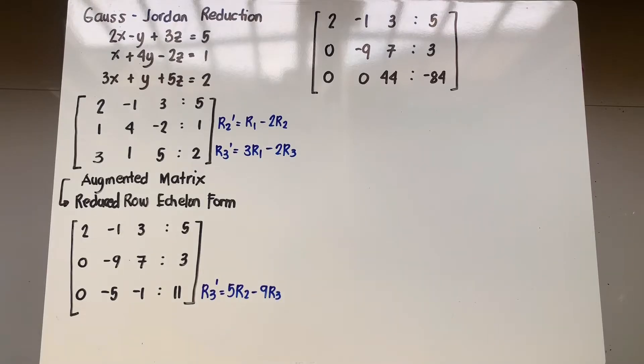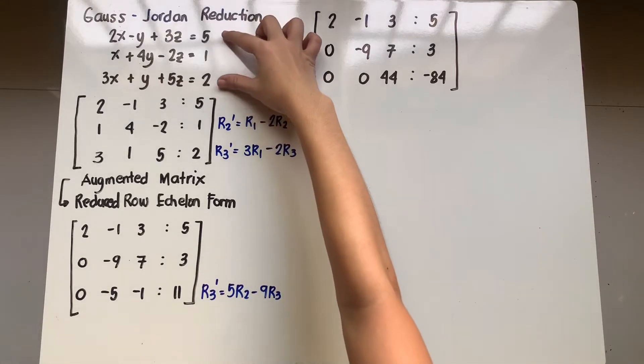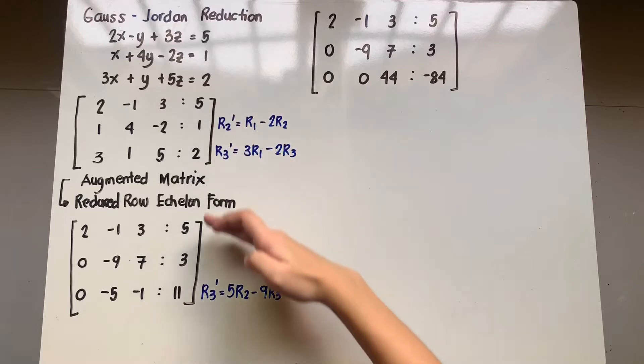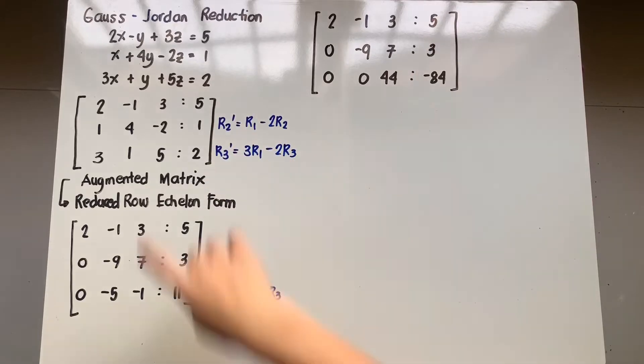So for our example in Gauss-Jordan reduction, I use the same set of examples we've been using for the past three methods and I simply copied the solution we've had using Gauss-Jordan elimination because Gauss-Jordan reduction is simply a continuation of the Gauss-Jordan elimination solution.